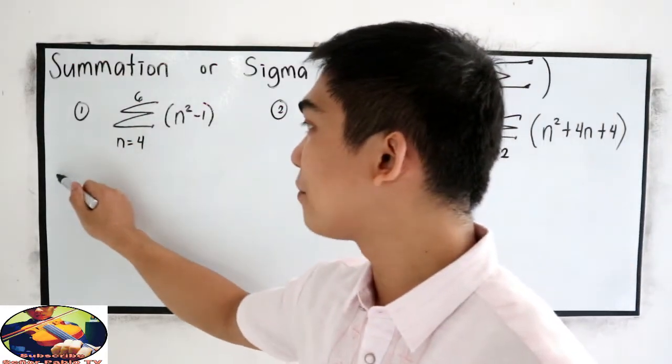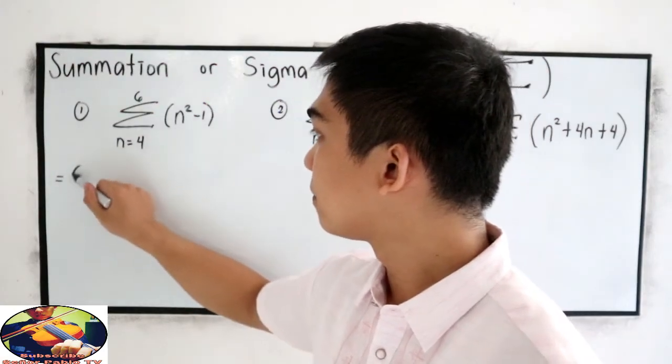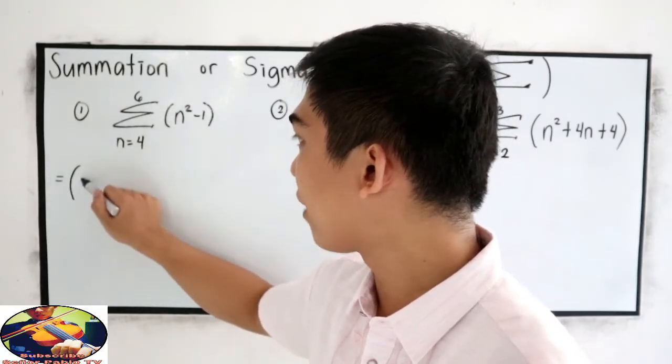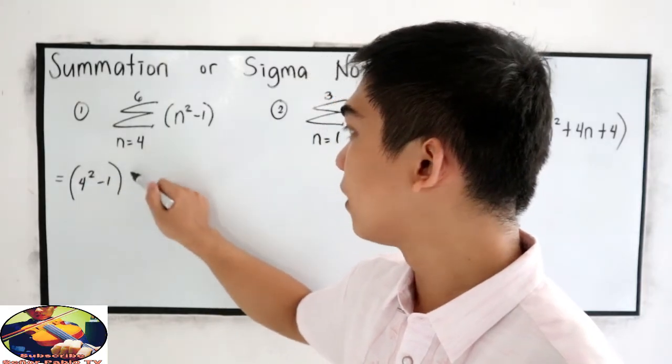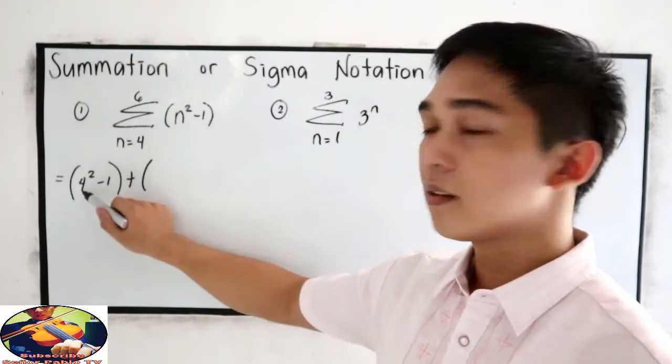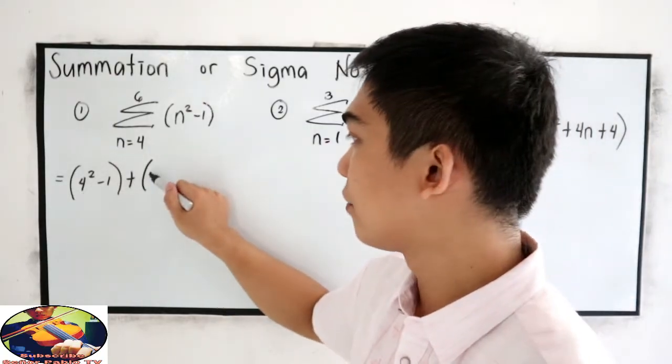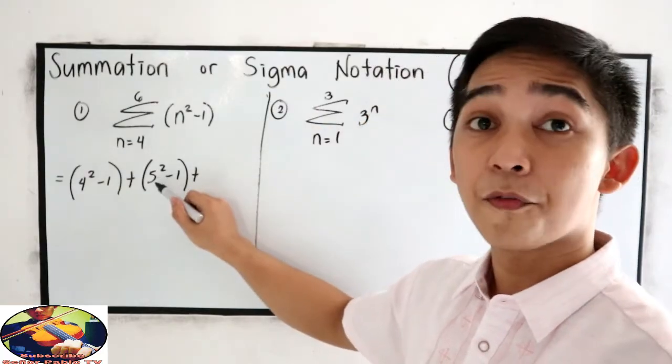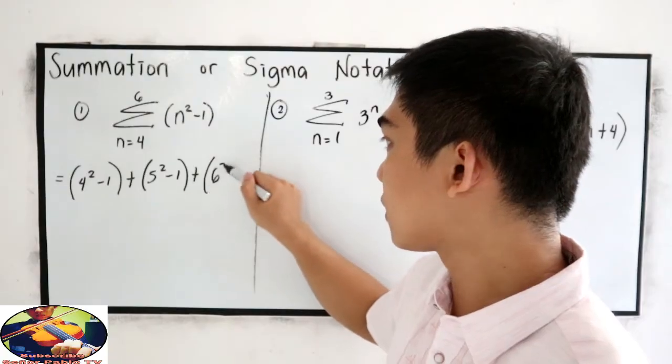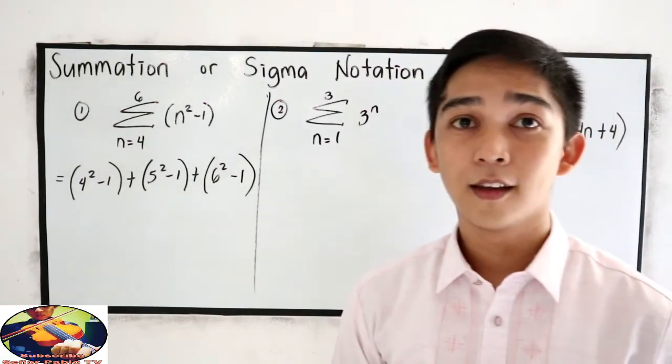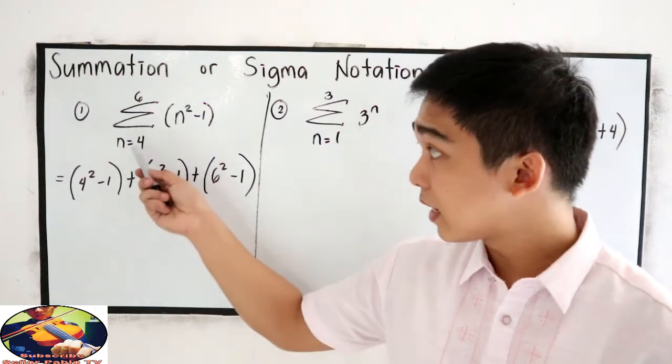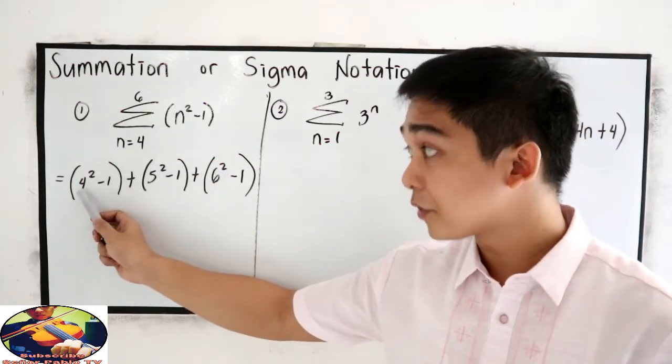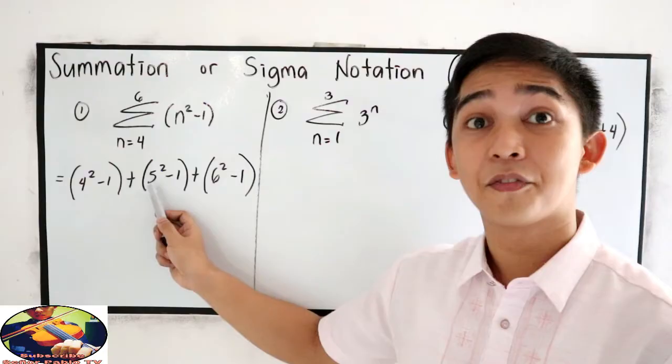So we have N squared. Let us start with 4. So we have 4 squared minus 1, plus 5 squared minus 1, plus 6 squared minus 1. Again, let us have a short review. Just change your N to 4. After 4, change to 5. Then after 5, change to 6. That would be our ending number.